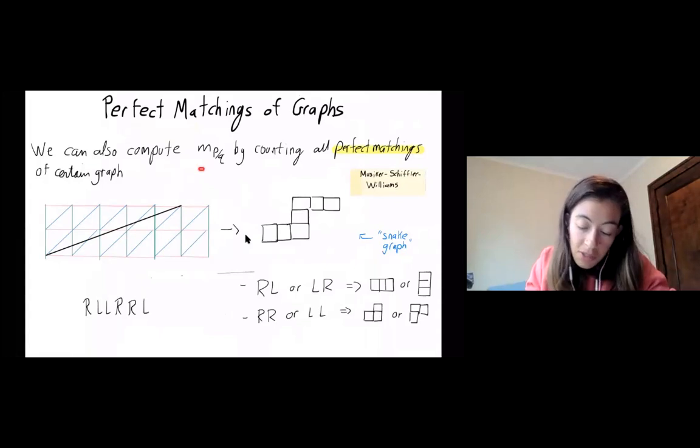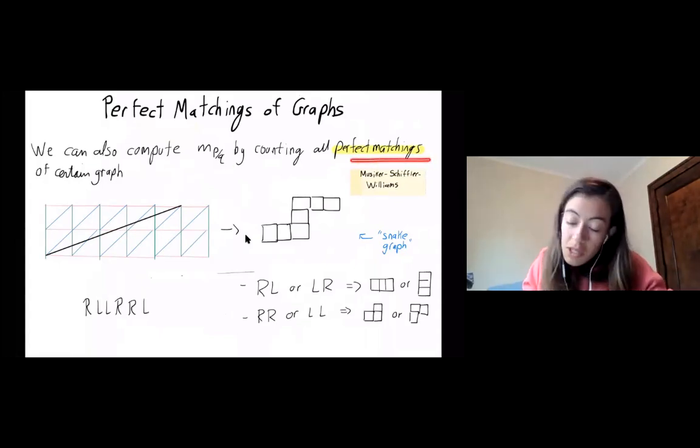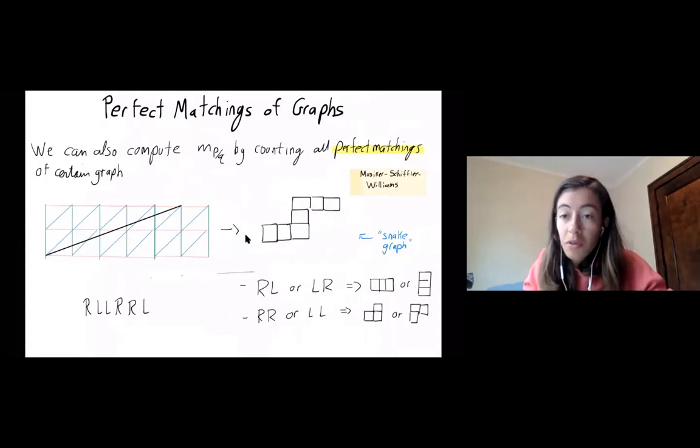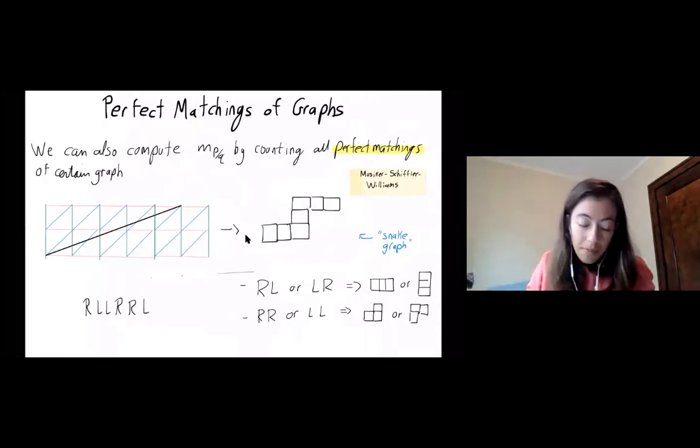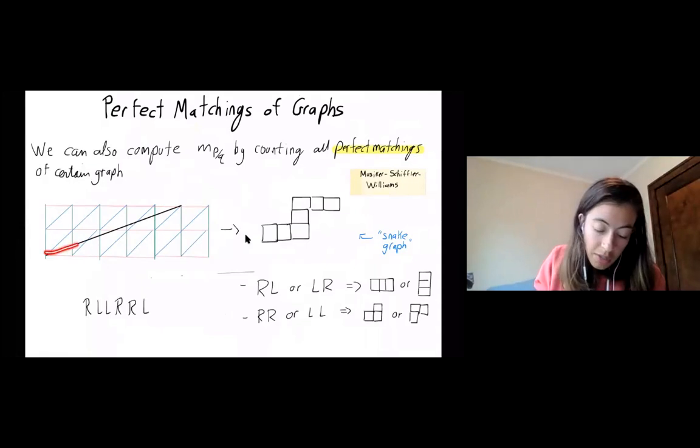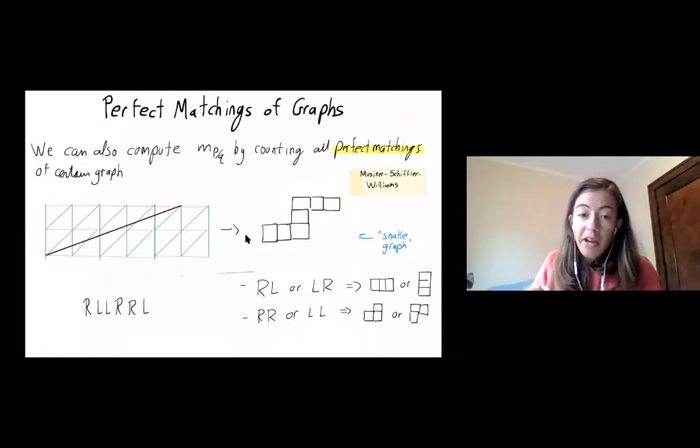You can also compute these numbers by counting certain perfect matchings of graphs. So this comes from work of Musick or Schiffler-Williams, who again, this is from a cluster algebra perspective, and we're sort of just setting all our variables to one. So with this from the same picture, so we have our arc, and we write down the same RL sequence. We don't fluff it out this time.